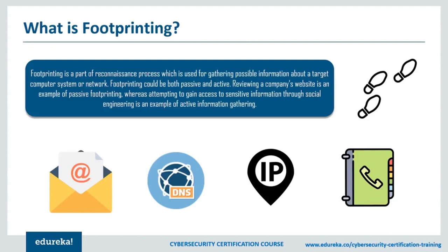If you can get access to a system, you want to know usernames, group names, system banners, routing tables, and SNMP information if you can get it, as well as DNS hostnames. This applies for both internal and external sides. If you're doing an internal penetration test or ethical hacking engagement, you want to know the networking protocols in use — are they using TCP/IP, UDP, IPX, SPX, DECnet, AppleTalk, or some sort of split DNS?